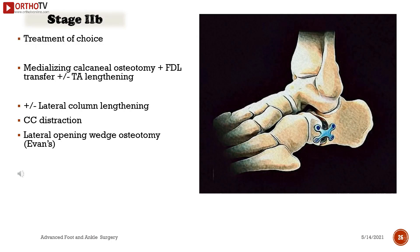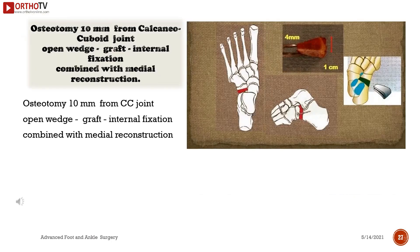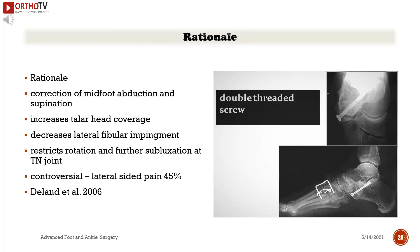Stage 2a treatment of choice: medializing calcaneal osteotomy plus FDL transfer plus/minus Achilles tendon lengthening, plus/minus lateral column lengthening. The Evans osteotomy is a calcaneal-cuboid distraction lateral opening wedge osteotomy placed 10 mm from the calcaneocuboid joint, with open wedge graft and internal fixation, combined with medial reconstruction. The rationale: correction of midfoot abduction and supination, increased talar head coverage, decreased lateral fibular impingement, and restriction of rotation and further subluxation at the talonavicular joint.